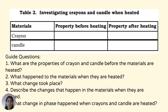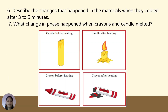Answer some guide questions: What are the properties of crayon and candle before the materials are heated? What happened to the materials when they are heated? What change took place? Describe the changes that happen in the materials when they are heated. What changes in phase happened when crayons and candle are heated? Describe the changes after 3–5 minutes. What change in phase happened when crayons and candle melted?